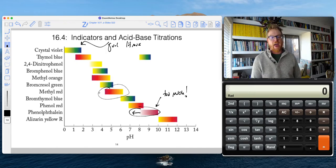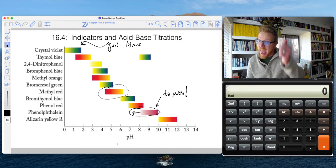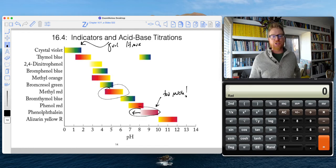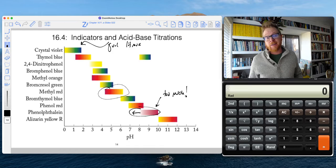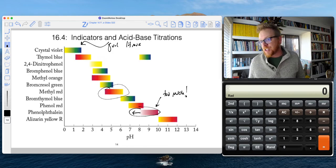You've also got methyl red in the QUAL lab as another litmus paper. So not only do we have these things as liquids that we can add small amounts to our solution, these types of indicators are also impregnated on litmus paper. And when you dunk that litmus paper into your solution, that's why it's able to change color, because it has these indicators. Pretty cool.